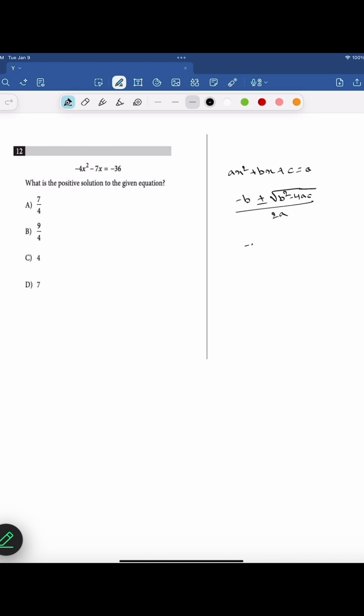Now, if we compare our given equation minus 4x square minus 7x equals minus 36, we can write this equation as 4x square plus 7x minus 36 equals 0. So a equals 4, b equals 7, and c equals minus 36.